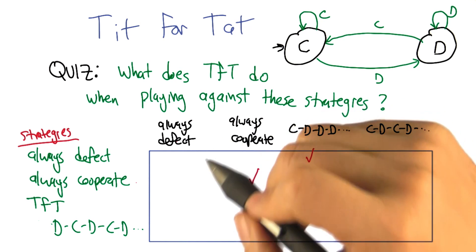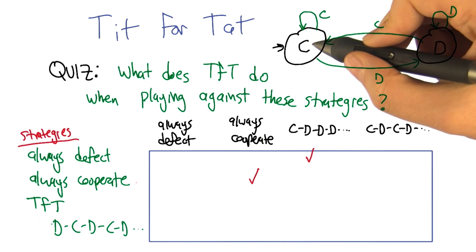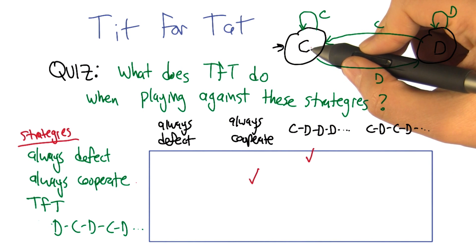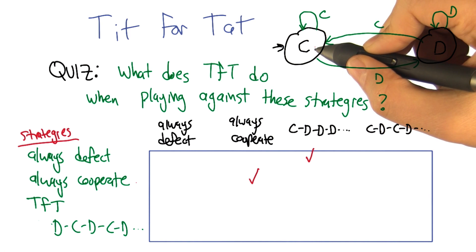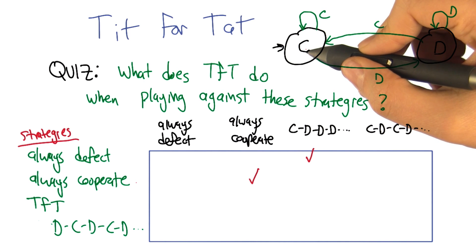All right. So what if tit for tat plays against another tit for tat? Well, I started out cooperating. My opponent cooperated. And since I'm going to do what that person does, I will cooperate. But since that person is doing what I did, they will also cooperate. And so we will both cooperate forever. So we will always cooperate.